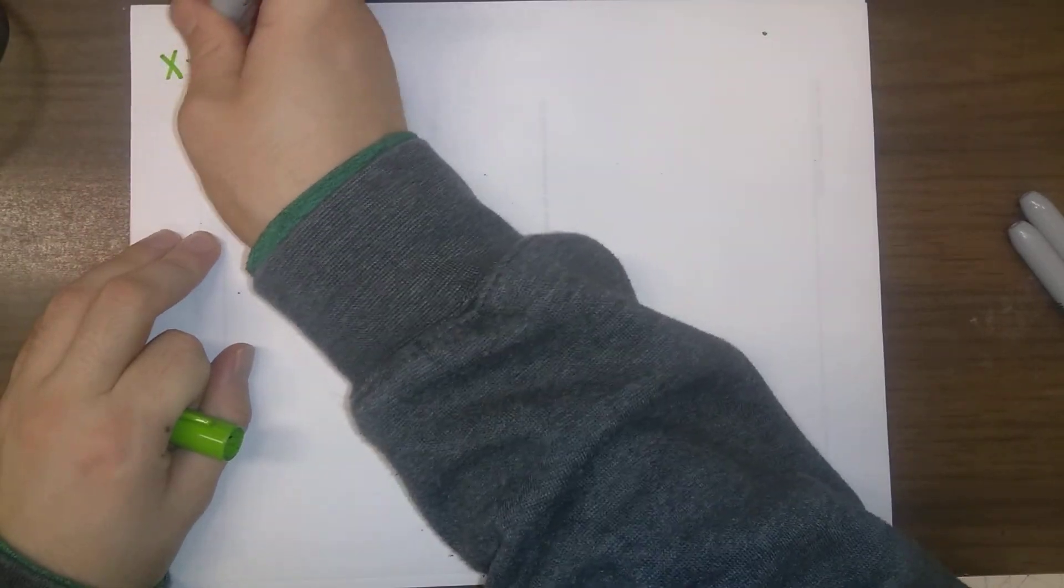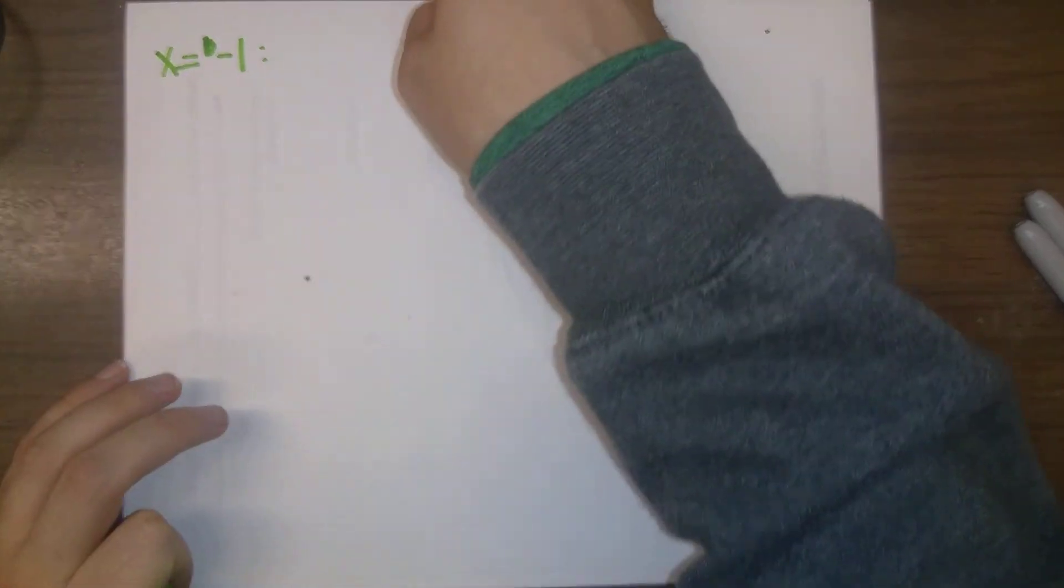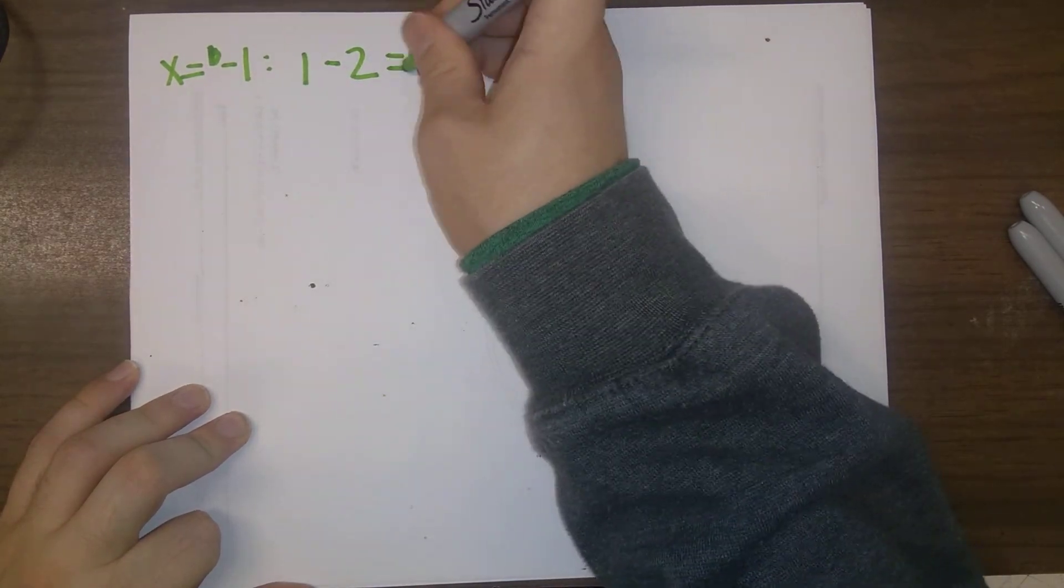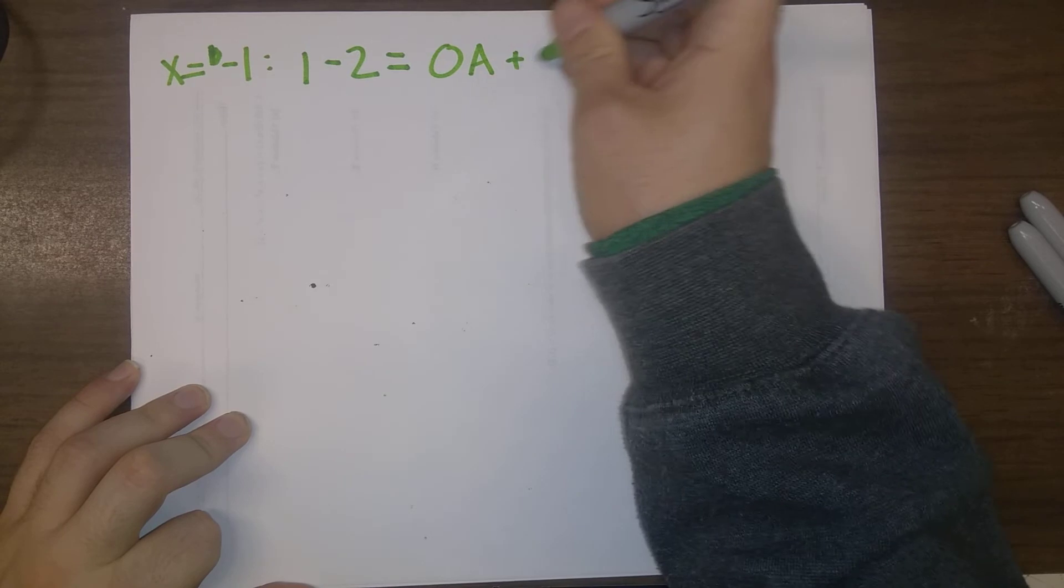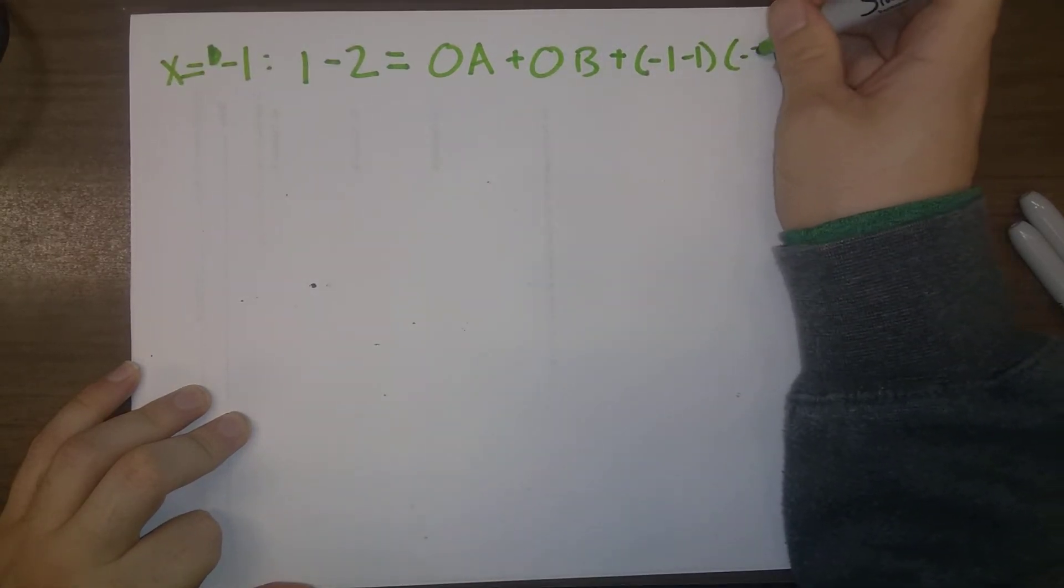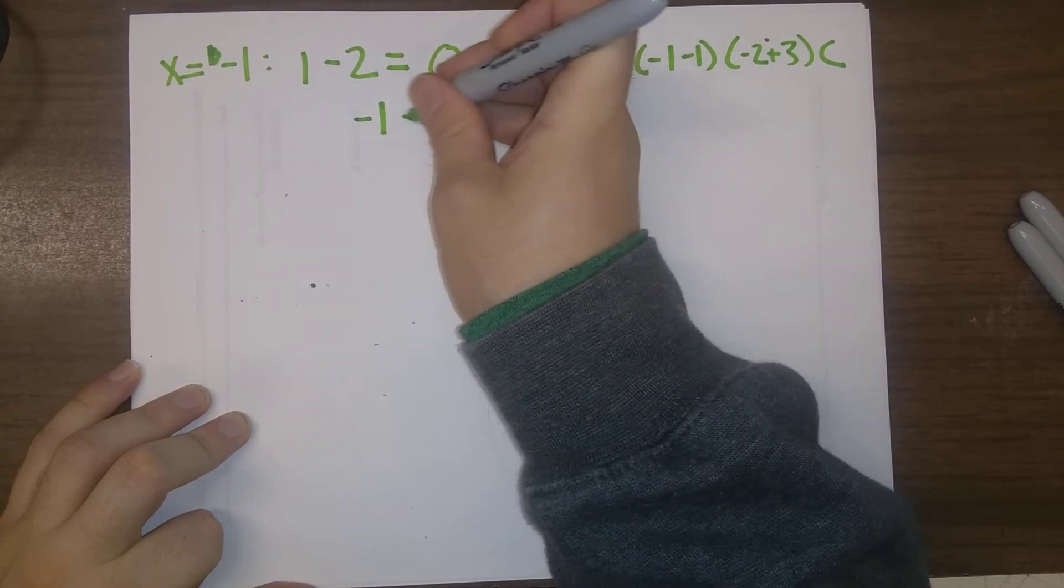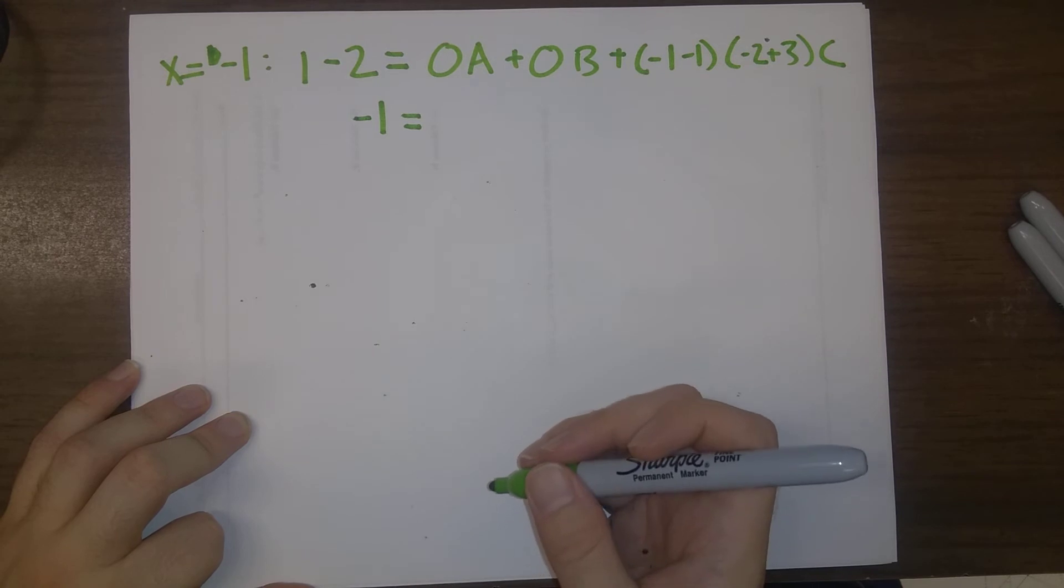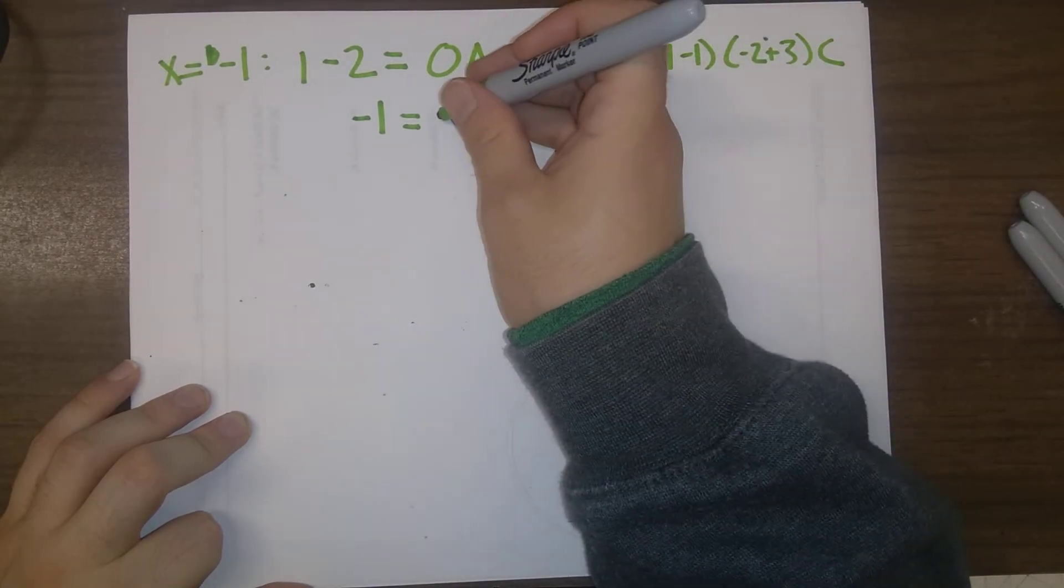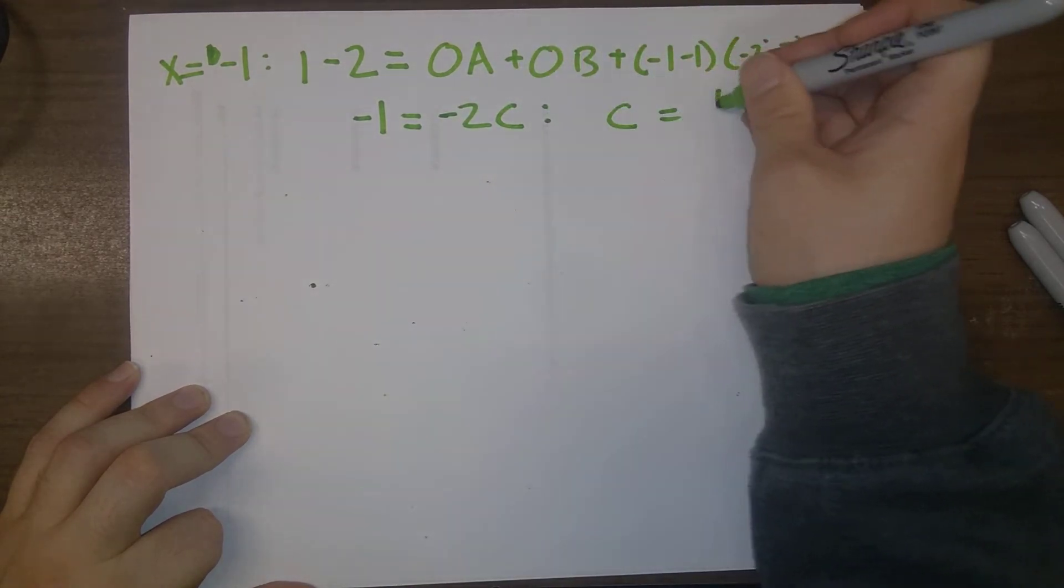So, that is going to be, minus 1 squared is plus 1 minus 2 is equal to 0A plus 0B plus minus 1 minus 1 times minus 2 plus 3 times C. So, minus 1 is equal to minus 2C. And so, C is equal to 1 half.